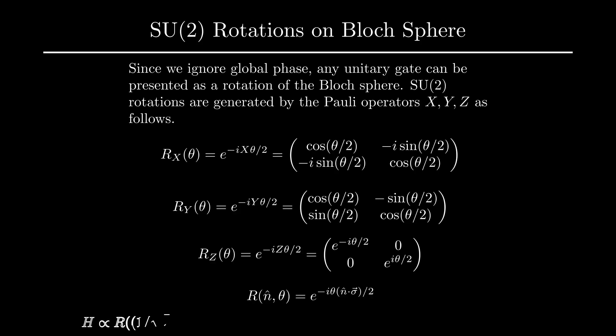As an example, the Hadamard transform H corresponds to a rotation about the diagonal axis 1 over root 2, 0, 1 over root 2, by angle theta equals pi, up to a global phase factor. We can also express this rotation in terms of Rx, Ry, and Rz as follows, again up to a global phase.